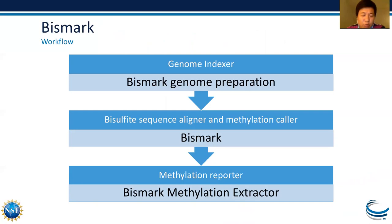BISMARK has been integrated into the CyVerse Discovery Environment and includes three parts: genome preparation, BISMARK alignment, and the methylation extractor. The genome preparation part converts your reference genome, does the indexing, and prepares the genome for mapping. BISMARK performs the mapping of bisulfite sequencing reads onto the prepared genome and makes the methylation calls for mapped cytosines. The methylation extractor then extracts results from the BISMARK output and generates various reports according to user needs.